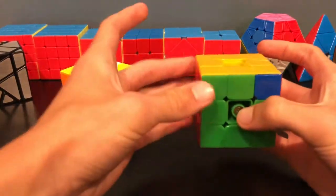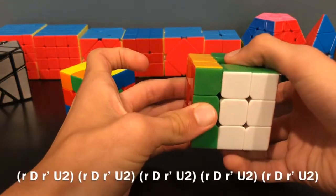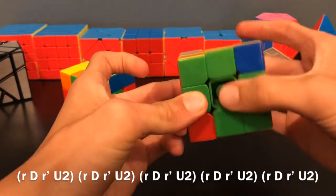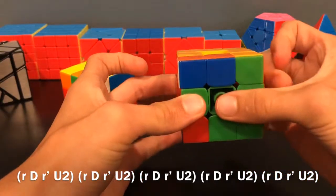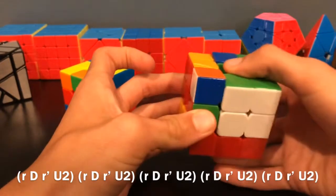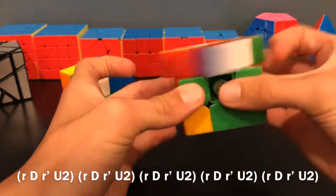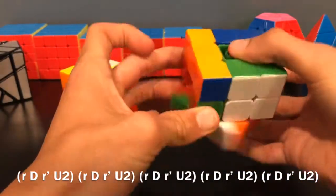If you had something like Nb, you would start with R wide D R wide prime U2. Instead of going down-up-up-down, it's up-down. Do it for a third time, do it for a fourth time, do it for a fifth time, and then you're done.